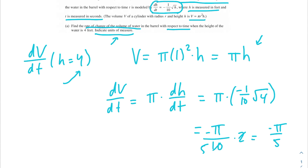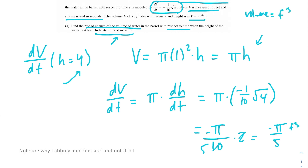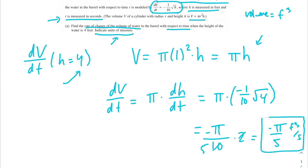The rate of change of volume is negative π over 5. Remember, the problem says to indicate units of measure. Volume is measured in cubic feet and time is measured in seconds, so our unit of measure is cubic feet per second. Our final answer is negative π over 5 cubic feet per second.